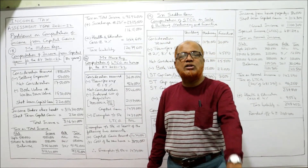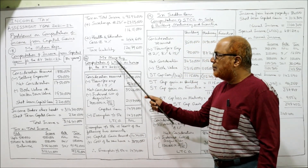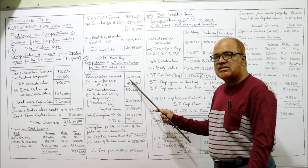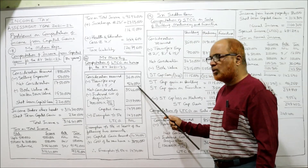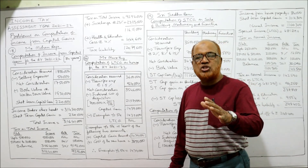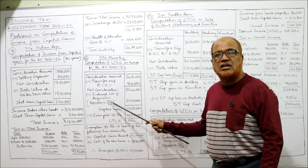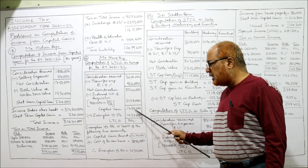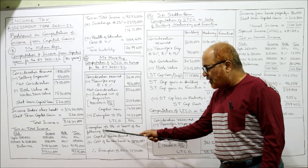This is a straightforward problem; the new point is the Section 54 exemption — which was not covered in earlier problems. Mr. Moorthy: computation of LTCG on house for the assessment year. Consideration received: 36 lakh. Less transfer expenses at 1.5%: 54 thousand. Net consideration. Less indexed cost of acquisition: cost of house was 7 lakh; multiplied by 301 (current year index) divided by 100 (purchase year index) = 21 lakh 7 thousand. Deduct to get capital gain of 14 lakh 39 thousand.